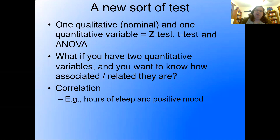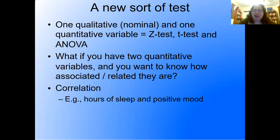Think about an example we'll carry through today: hours of sleep and positive mood — two continuous variables. Maybe we're rating mood from one to ten, and hours of sleep typically goes from zero to twelve. Both are continuous variables, and we want to know if they're related or associated.